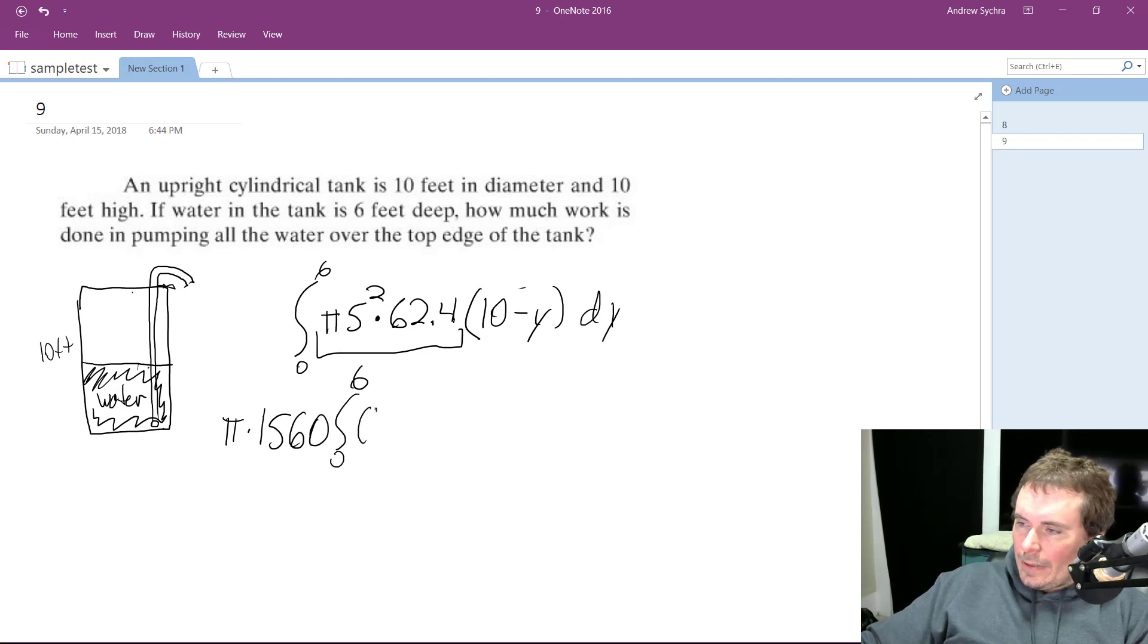and then just (10 - y) dy. So we get 1560π, and then [10y - y²/2] from 0 to 6.